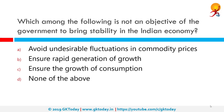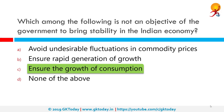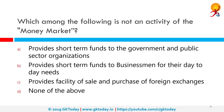Which among the following is not an objective of the government to bring stability in the Indian economy? The correct answer is to ensure the growth of consumption. The objective of fiscal policy is to maintain conditions of full employment, economic stability, and to stabilize the rate of growth. For an underdeveloped economy, the main purpose of fiscal policy is to accelerate the rate of capital formation and investment.